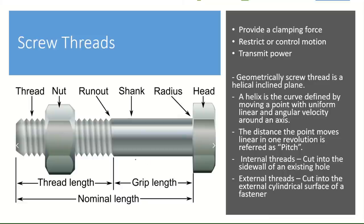Geometrically, the screw thread is basically a helical inclined plane. The helix is a curve defined by moving a point with uniform linear and angular velocity around an axis, and the distance the point moves linearly in one revolution is called the pitch. The pitch of the thread is the most important number in practical applications. Internal threads are cut into the sidewall of an existing hole, and external threads are cut onto an external cylindrical surface of a typical fastener.